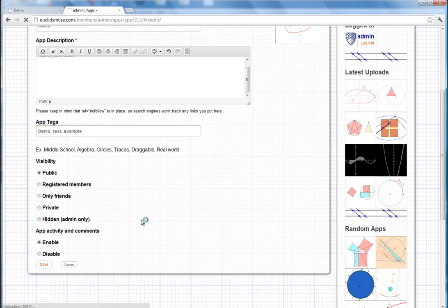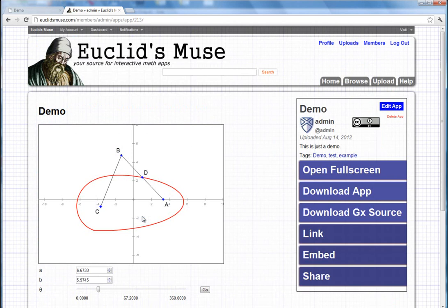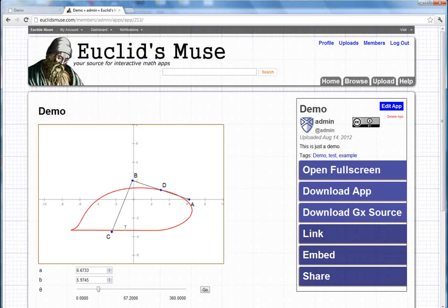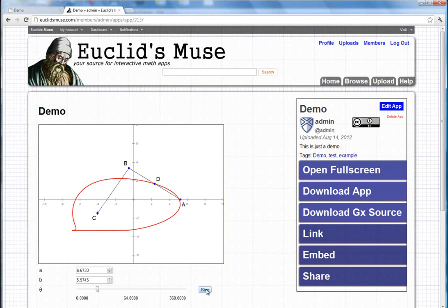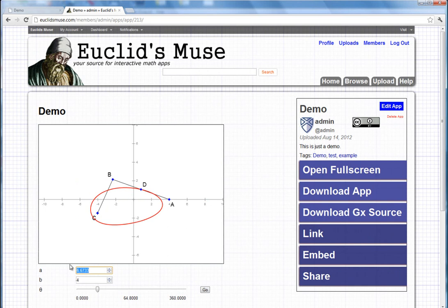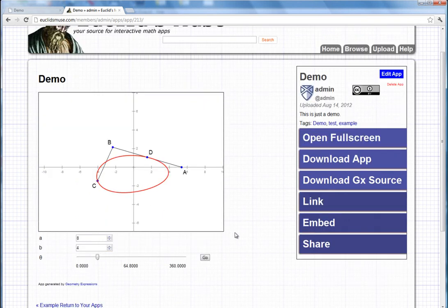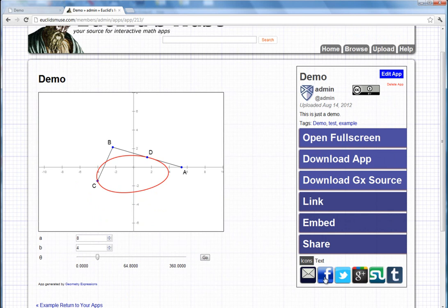And so everything's ready to go, just hit save, and there you have it. And so now we've got our nice app. It's still nice and interactive. We can drag that point around, play with the slider, or animate it. As well as manipulating our text box inputs here just like this. And then from here, sharing is just one easy click away.